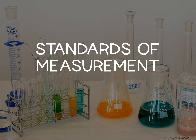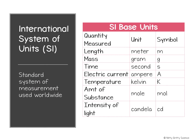Standards of measurement. A standard is an exact quantity that people agree to use to compare measurements. In 1960, an improved version of the metric system was devised known as the International System of Units, or abbreviated SI. All international systems of unit standards are universally accepted and understood by scientists throughout the world.